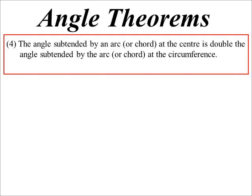So the angle subtended by an arc or a chord at the center is double the angle subtended at the circumference. Let's have a look at a picture of that.